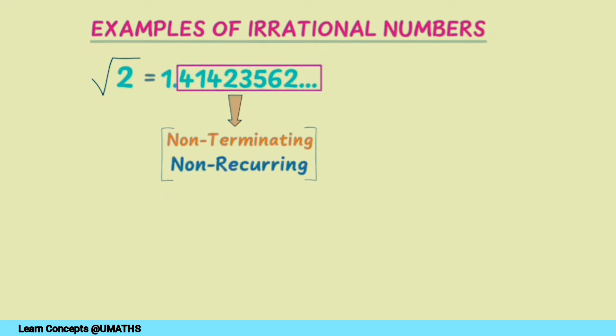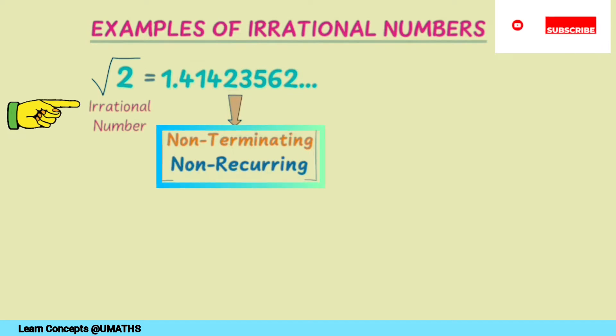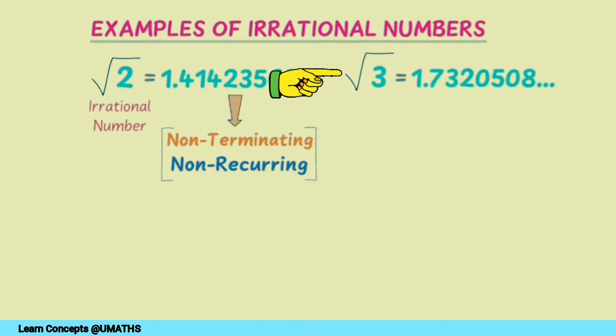The decimal part of this number never terminates, and the digits in the decimal part are not recurring, so √2 is an irrational number due to non-terminating and non-recurring decimal. Consider √3, for instance.